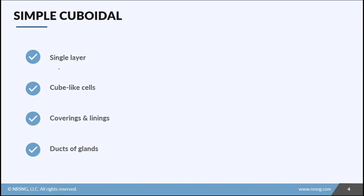Next is simple cuboidal. Simple means single layer. Cuboidal means a cube-like cell. There's two main places we find this: coverings and linings, like over the lens of the eye or linings of the kidney tubules, and in the ducts of exocrine glands. If you check out the lesson on glands, you'll see this shape of epithelium inside of those ducts.